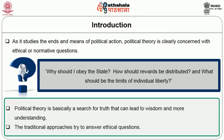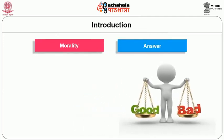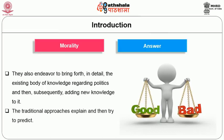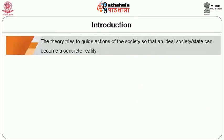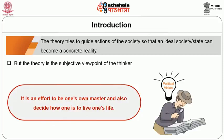The traditional approaches try to answer ethical questions. They try to explore the worlds of morality and answer what is good or bad. They also endeavour to bring forth in detail the existing body of knowledge regarding politics and then subsequently add new knowledge to it. The traditional approaches explain and then try to predict. The theory tries to guide actions of the society so that an ideal society or state can become a concrete reality. But the theory is the subjective viewpoint of the thinker.